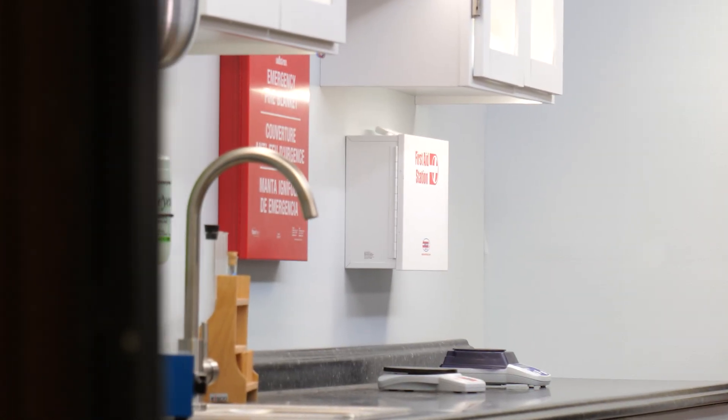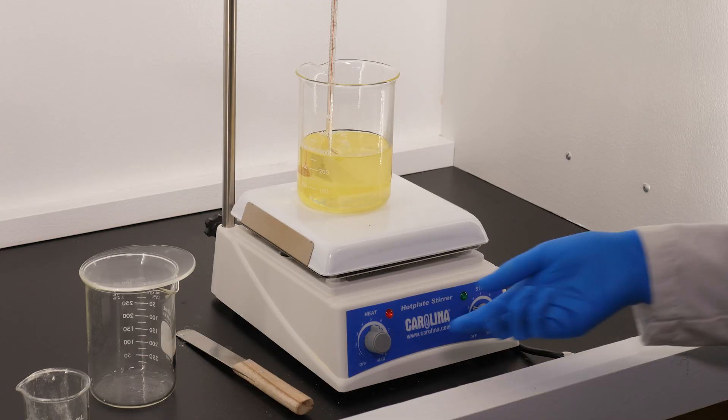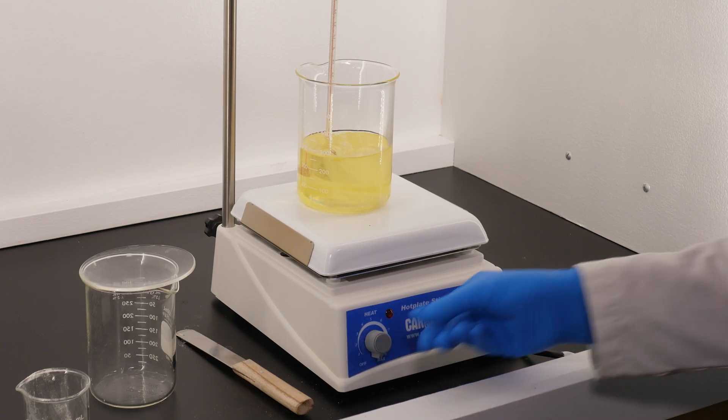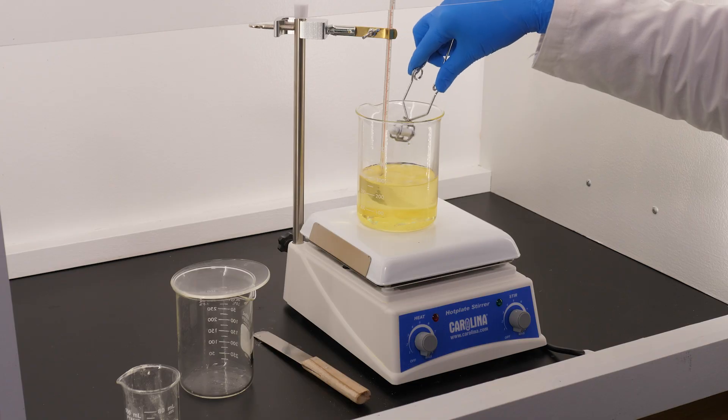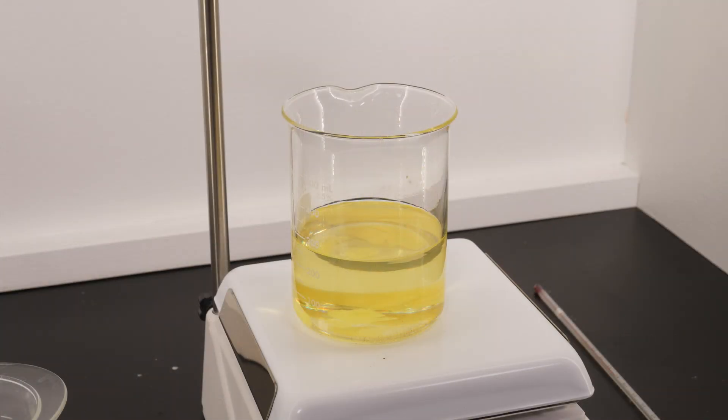By now, our sulfur should be fully dissolved in the solvent, so let's return to the lab. Now that the sulfur is dissolved, we turn off the heater and the stirrer, remove the stir bar, and let the solution sit undisturbed.